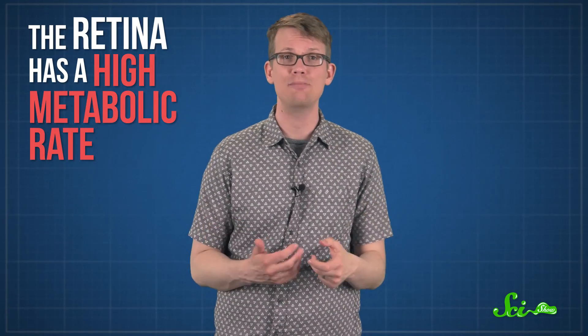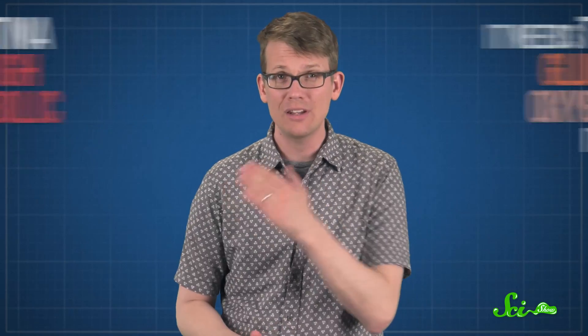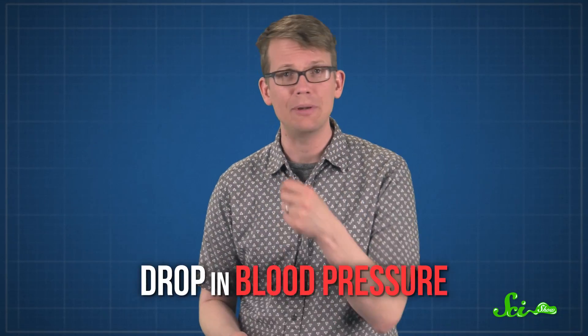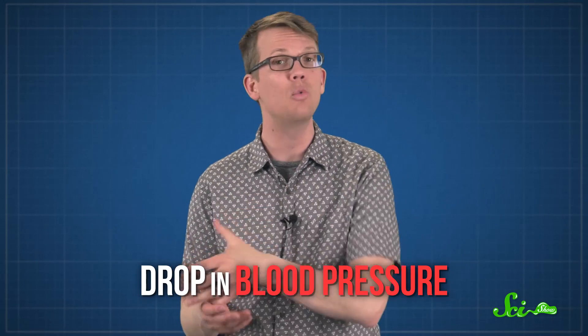But there are other ways to see phosphenes, like if you ever had your vision go wonky when you stood up too fast. The retina has an especially high metabolic rate, which means that it needs tons of glucose and oxygen for its size. When you stand up too fast, there's a sudden drop in blood pressure, and for a few seconds, your retinas might not get enough blood to work properly.